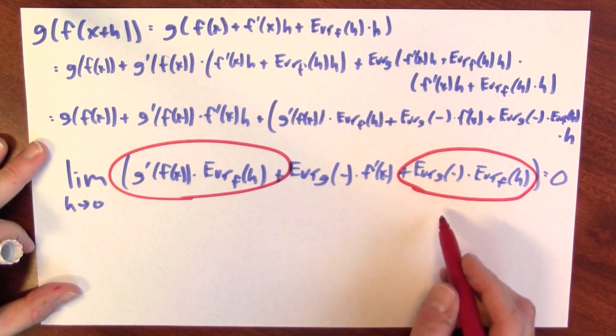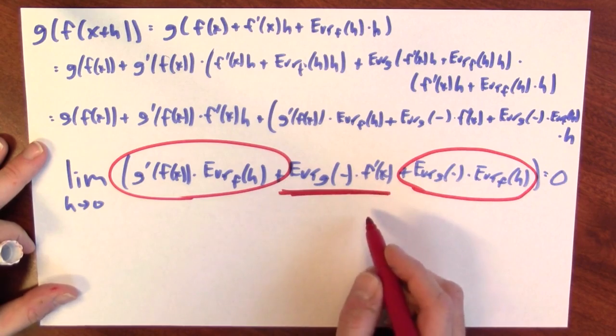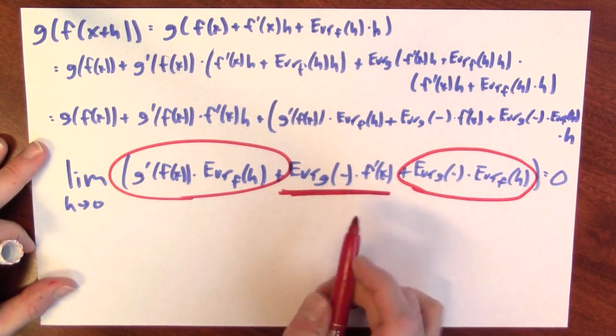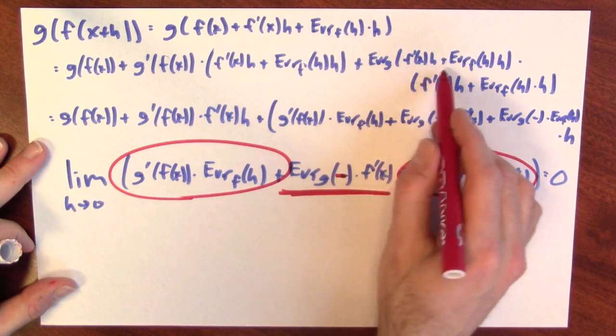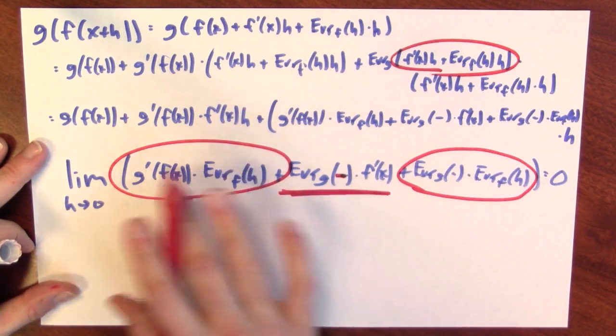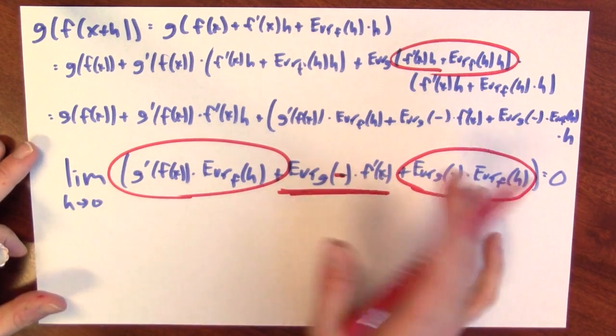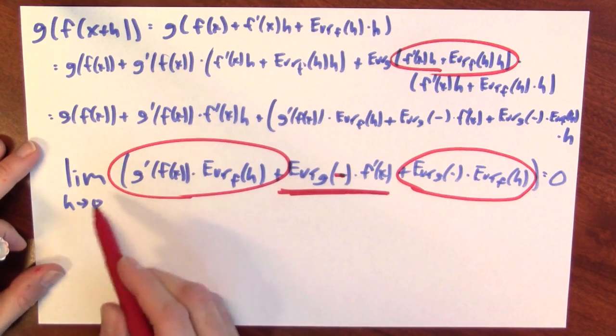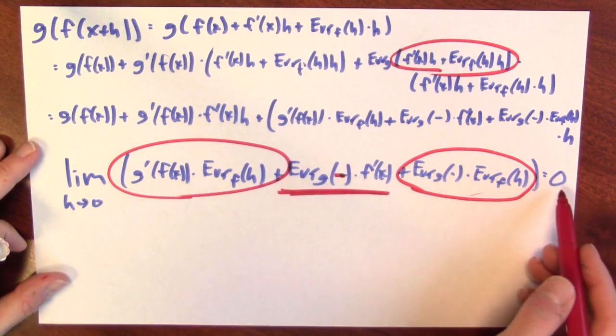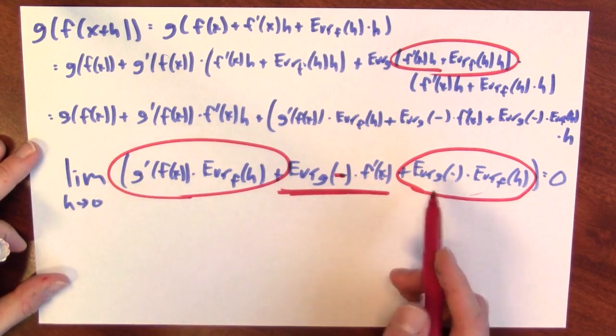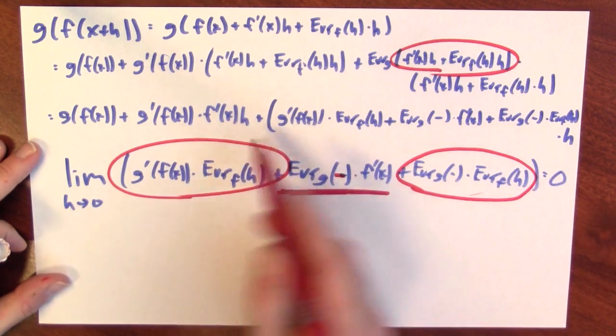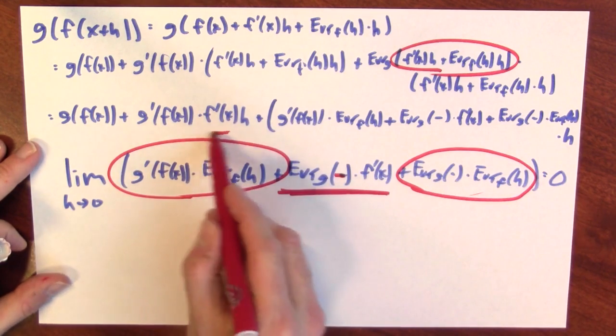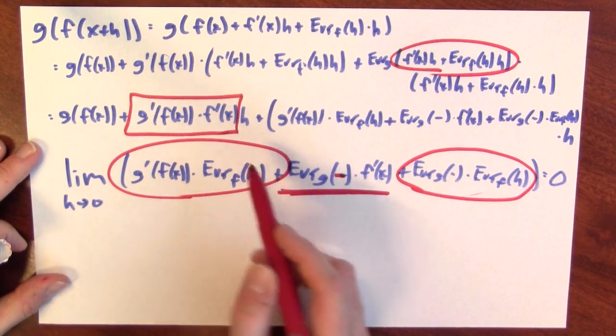The most mysterious term is this, but if you think a little bit more about it, the error of g at this hyphen thing, which I'm abbreviating this whole thing here, also goes to 0 as h goes to 0. And that's enough then to know that the limit as h goes to 0 of this quantity is 0, which is then enough to say that g of f of x plus h equals this quantity actually implies that this is the derivative. So here's what we've actually shown.